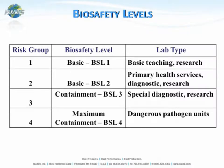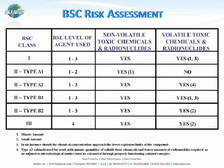Risk group 4 falls into BSL level 4, appropriate for dangerous and exotic agents that pose a high individual risk of life-threatening disease. The different BSC classes also have alignment with BSL level agents used, including non-volatile toxic chemicals, volatile toxic chemicals, and radionuclides, listed by whether they can be used in minute or small amounts depending on the type and classification of the biological safety cabinet.